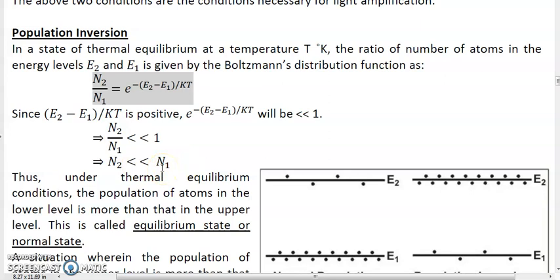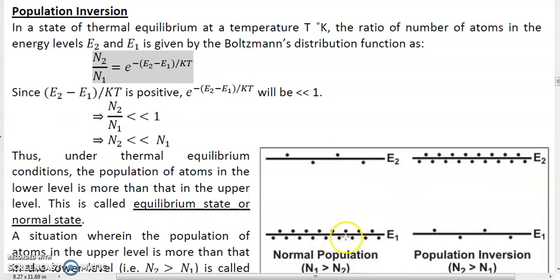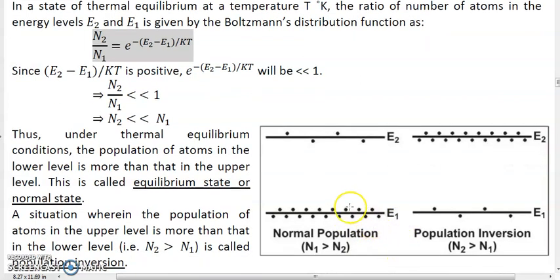Under normal circumstances, which energy level will be more populated? The lower level. That is by nature — we know atoms try to always attain the lower energy state. If you don't supply any energy, under normal circumstances at any given temperature t, there will always be more atoms in the level e1 than in the level e2, which is shown in this figure — normal population. This state is called a normal population state wherein n1 is greater than n2, as given by the Boltzmann distribution function. You can see here there are more atoms in the lower level and less atoms in the upper level.